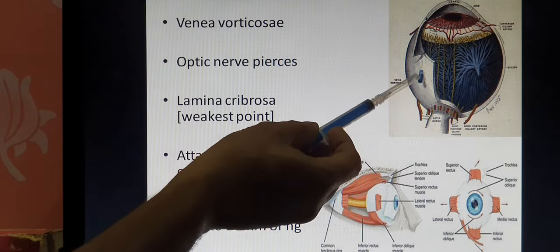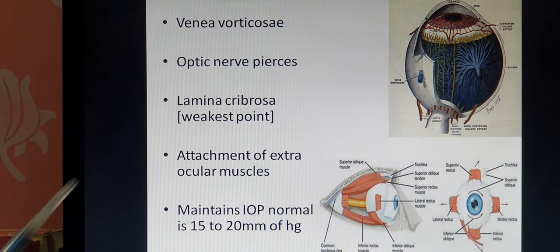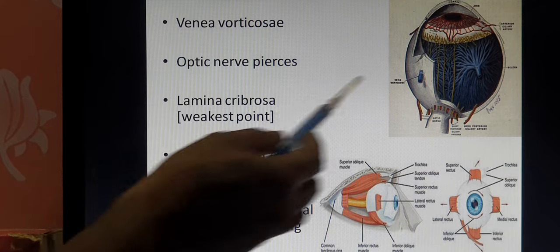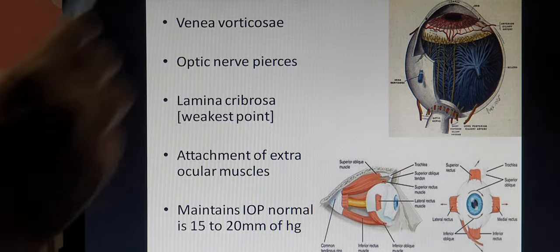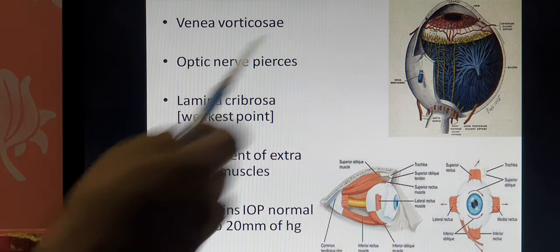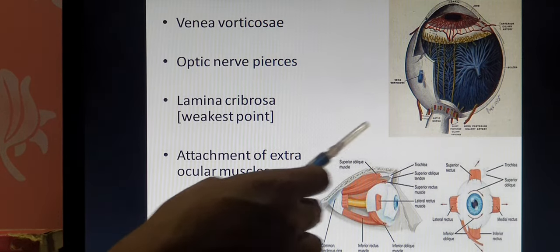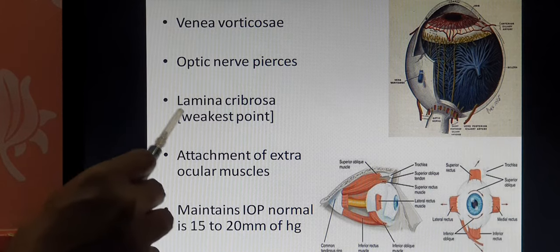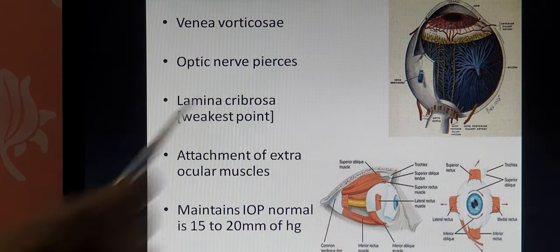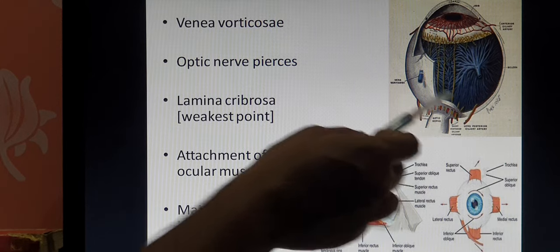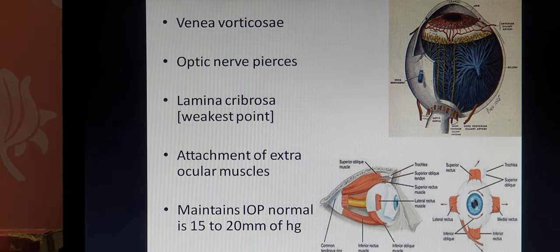On the posterior aspect of the sclera, the interior venous system of the eyeball emerges as four veins that pierce the sclera. These four veins are called vena vorticosa. Similarly, near the posterior pole, the optic nerve enters and penetrates inside the sclera. While penetrating, the axons of the optic nerve create perforations. That perforated part is called the lamina cribrosa — this is the weakest point. It is formed due to the entry of the axons of the optic nerve, making it look like a sieve or filter.